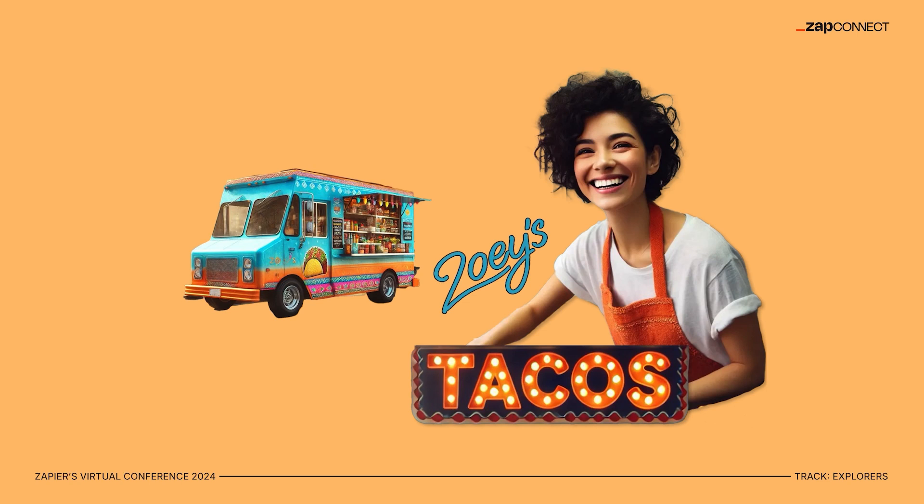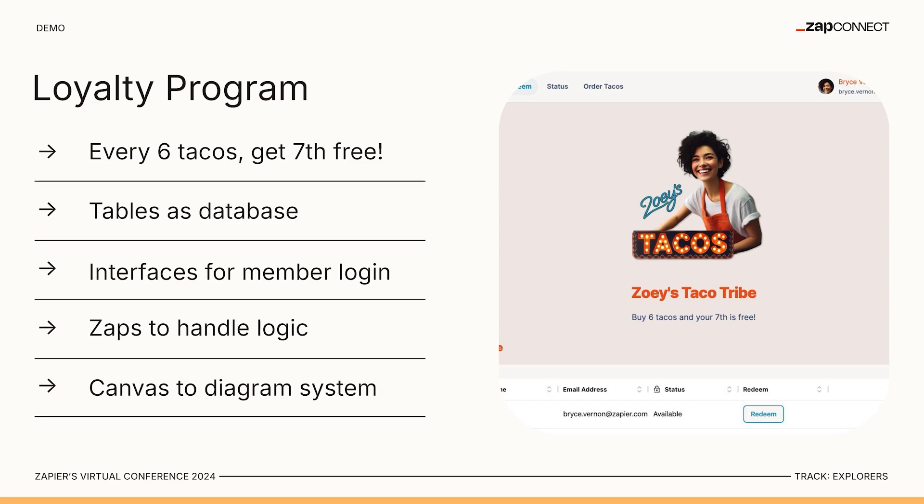She makes an incredible taco, but she lives in Austin, Texas — there are lots of taco trucks. So how can she keep her taco truck top of mind for all of her customers? A loyalty program. But she doesn't want to just buy loyalty program software or add another subscription. So she looks to Zapier and builds out her loyalty program there.